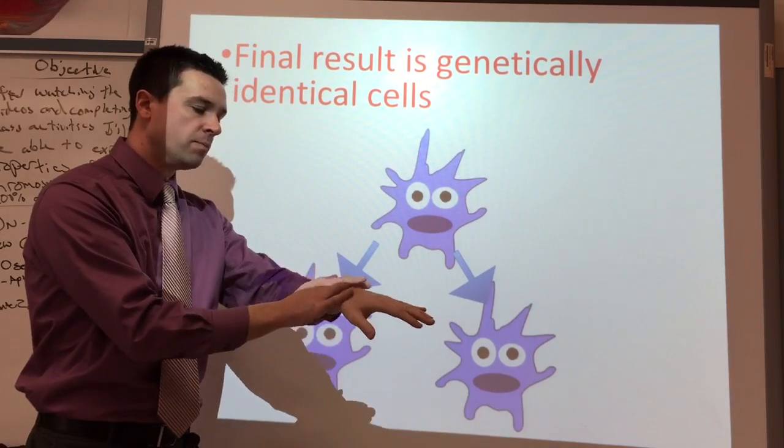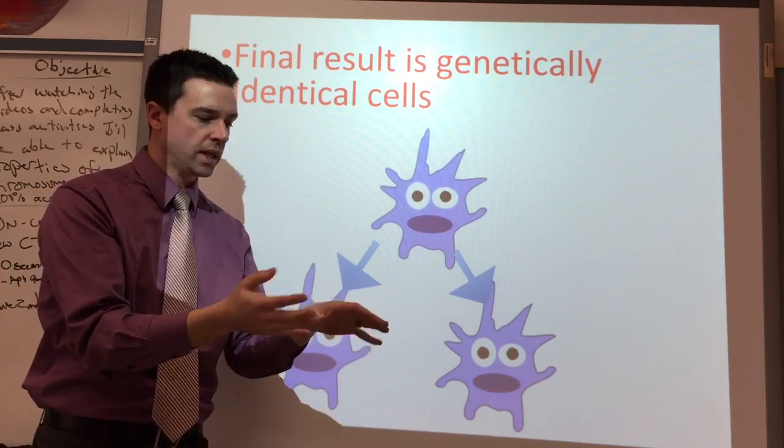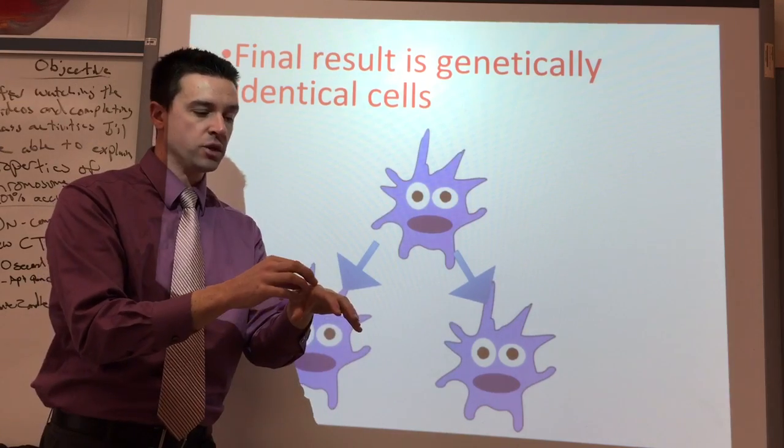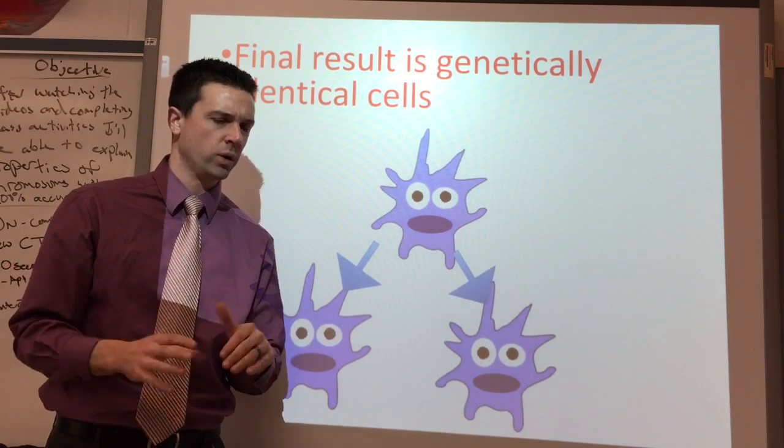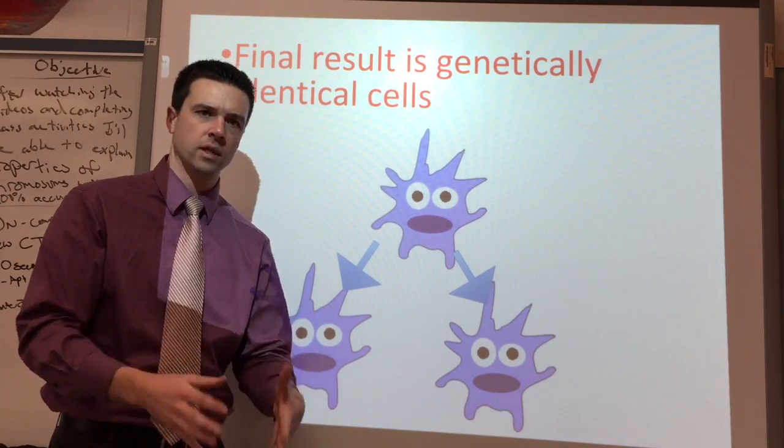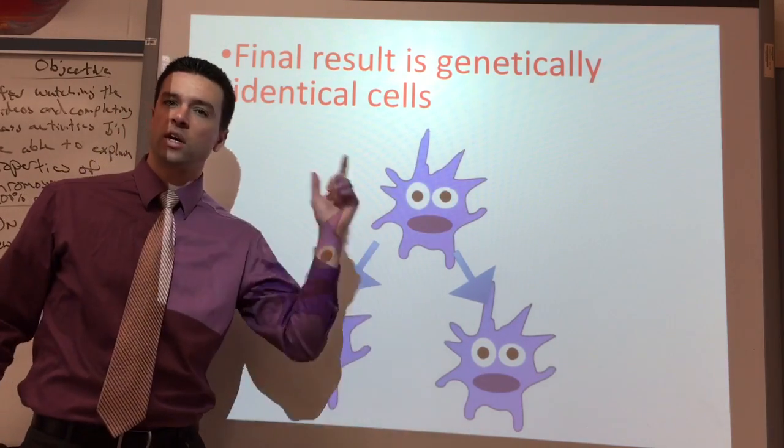They're exactly the same at the very end because the whole point of it is whenever you go through mitosis, and we're going to talk about in a little bit, like if you get a cut or you're growing and you grow new cells, you want them to be exactly the same as they started before. You wouldn't want all weird new cells afterwards. They have to be exactly the same, so new cells are exactly the same at the end of mitosis.